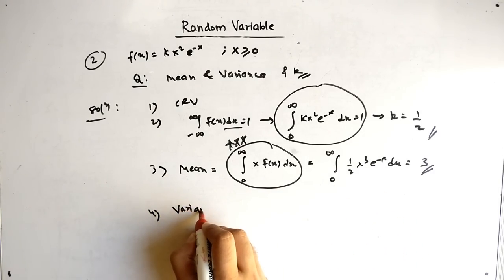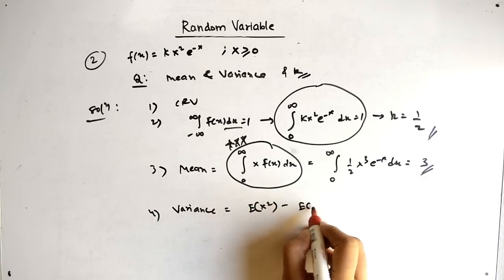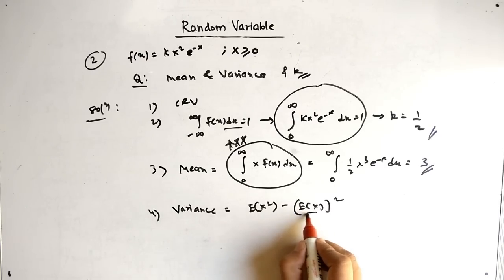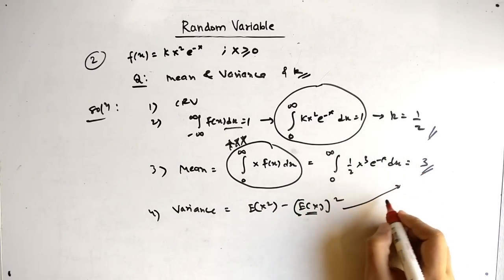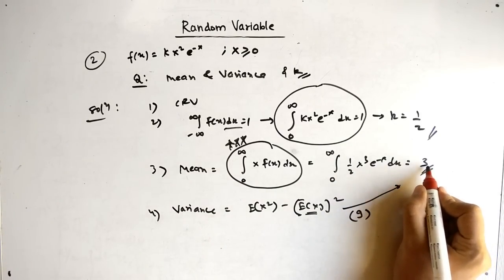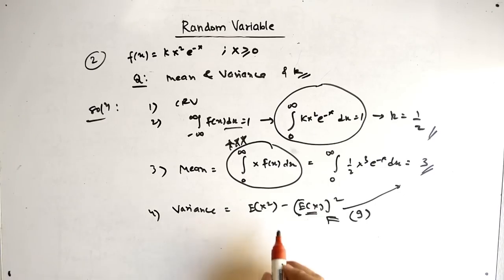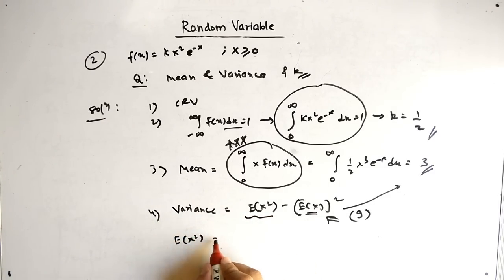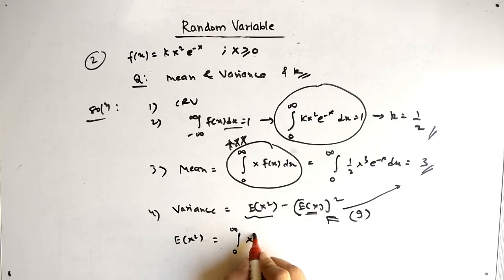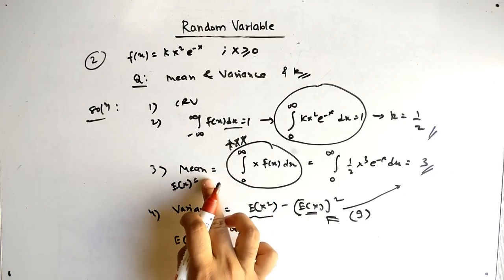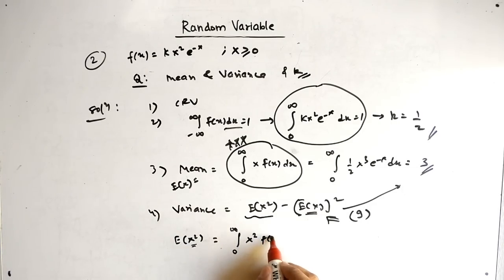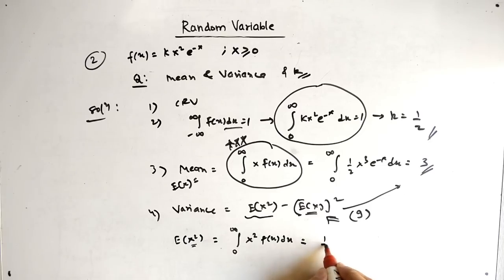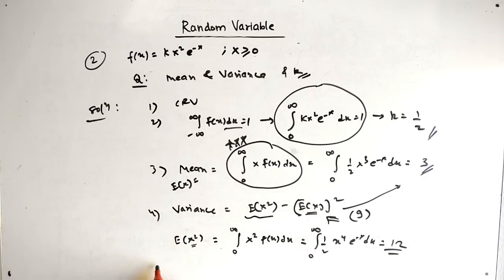The variance formula is: Var(x) = E(x²) − [E(x)]². We have found E(x) = 3, so [E(x)]² = 9. Now we need to find E(x²), which equals the integral from 0 to infinity of x² times f(x) dx. Substituting gives (1/2) times the integral of x⁴ e^(−x) dx from 0 to infinity. Solving this gives E(x²) = 24.